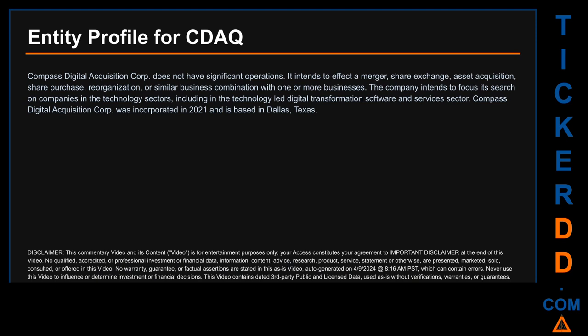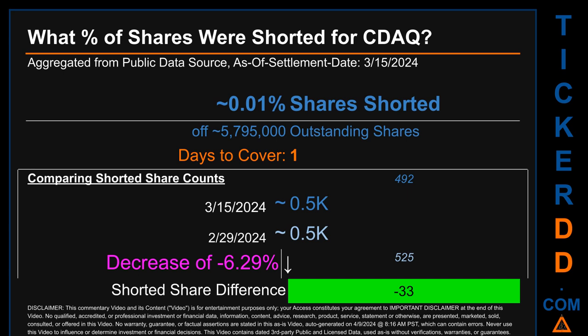Compass Digital Acquisition Corp intends to affect a merger, share exchange, asset acquisition, share purchase, reorganization, or similar business combination with one or more businesses. The company intends to focus its search on companies in the technology sectors, including the technology-led digital transformation, software, and services sector. Compass Digital Acquisition Corp was incorporated in 2021 and is based in Dallas, Texas.